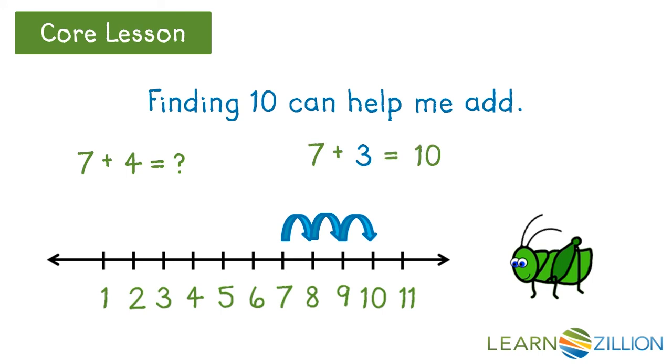7 plus 3 is 10. 4 is 3 plus 1. So, if we go one more, we'll get 11. 7 plus 4 equals 11.